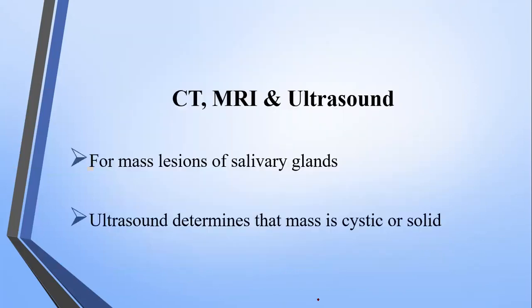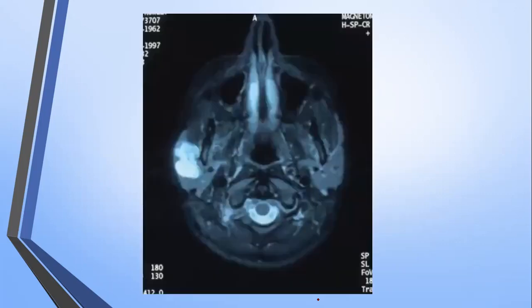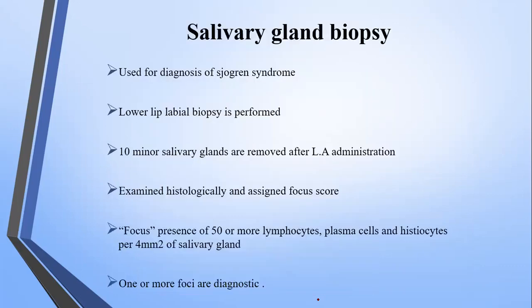Other diagnostic modalities include CT scan, MRI, and ultrasound, which are used for enlarged salivary glands. Ultrasound is used to determine whether a mass is cystic or solid — whether it is a tumor or a cyst. This is a CT scan picture showing salivary gland pathology.